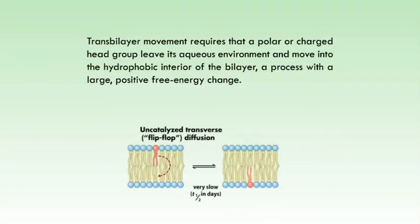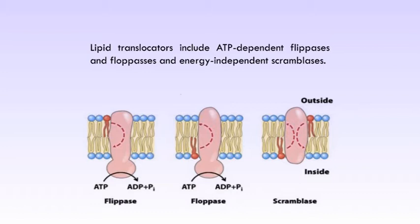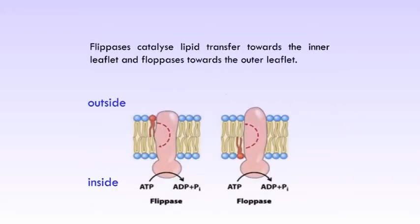Transbilayer movement: at physiological temperature, transbilayer or flip-flop diffusion of a lipid molecule from one leaflet of the bilayer to the other occurs very slowly. Transbilayer movement requires that a polar or charged head group leave its aqueous environment and move into the hydrophobic interior of the bilayer, a process with a large positive free energy change. Establishment and maintenance of lipid asymmetry involves several membrane proteins. These lipid translocators include ATP-dependent flipases and flopases and energy-independent scramblases. Flipases catalyse lipid transfer towards the inner leaflet and flopases towards the outer leaflet.